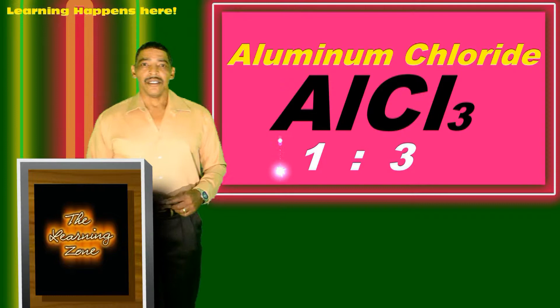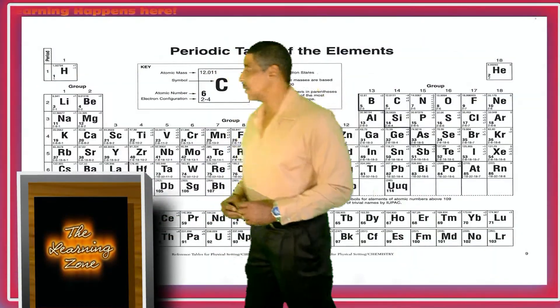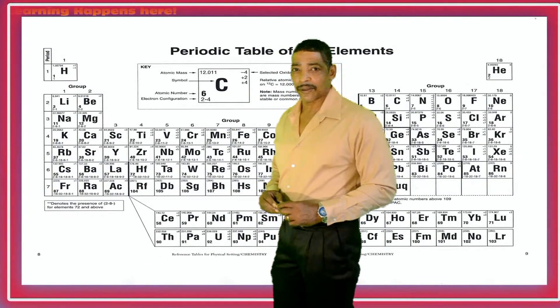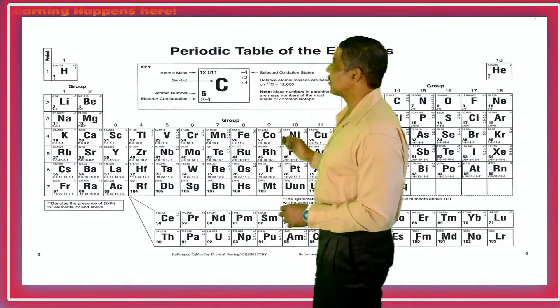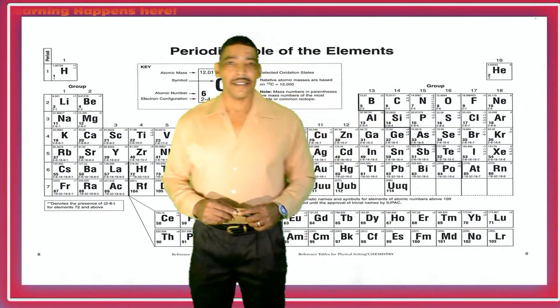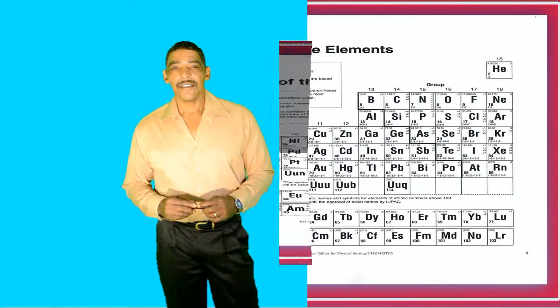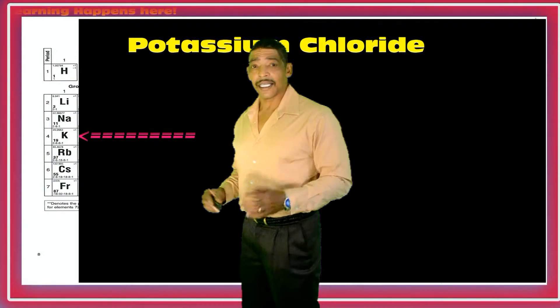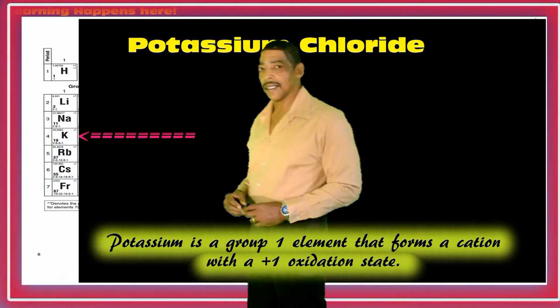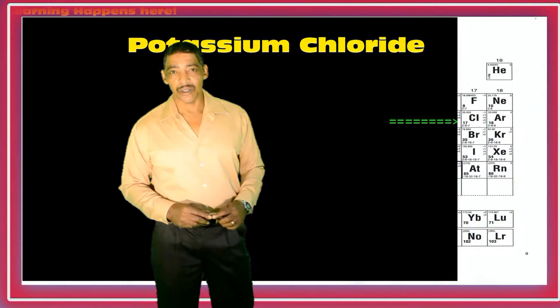To determine the GFM or Gram Formula Mass of any compound, we should first refer to the periodic table, where the metallic elements are all written on the left side and the non-metallic elements are all written on the right side. Consider the compound potassium chloride, which contains the ion of the metallic element potassium and the ion of the element chlorine, which would be chloride.